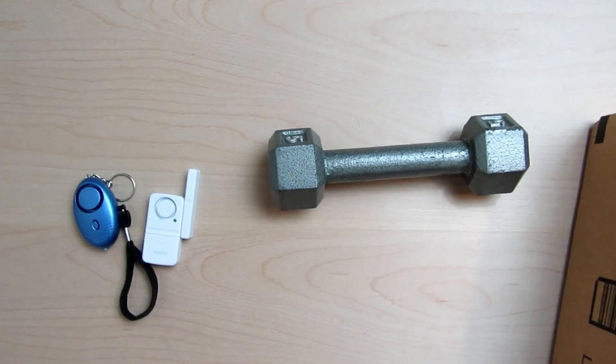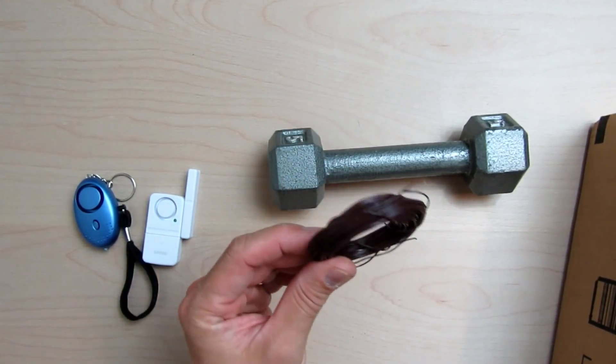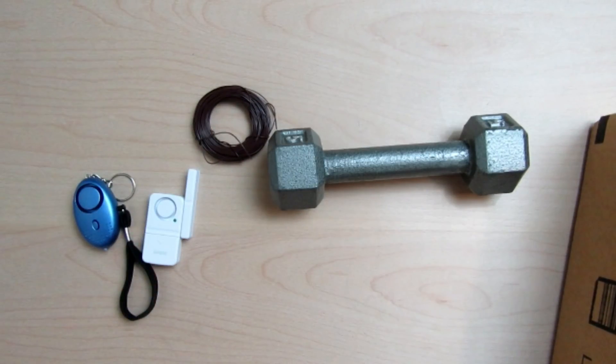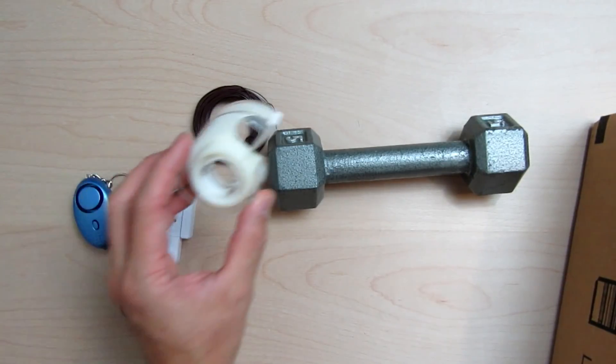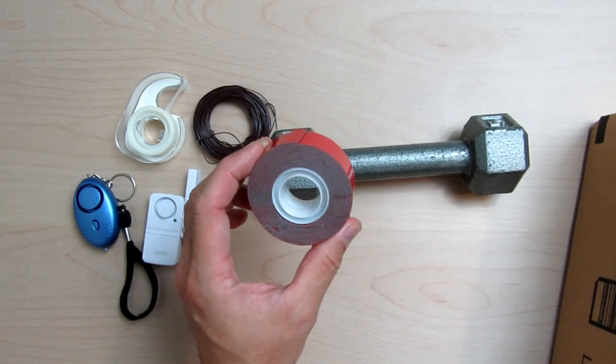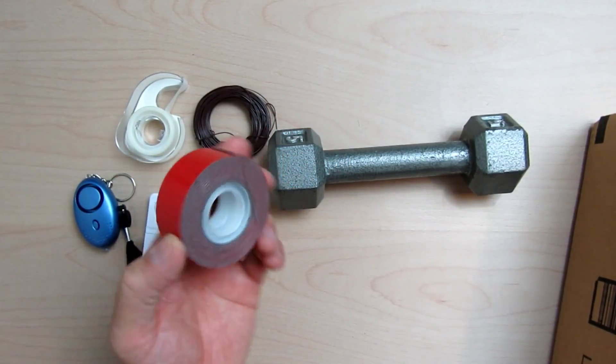Then we will need some type of string. A fishing line or a thin wire should work with this setup. It will be inside the box so any color of string will work. We need some scotch tape and some mounting tape. You can also use a hot glue gun or some type of glue. This will be used to mount the alarm on the box.